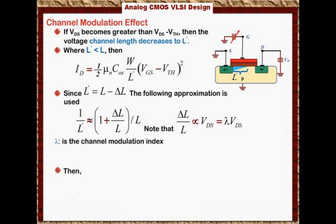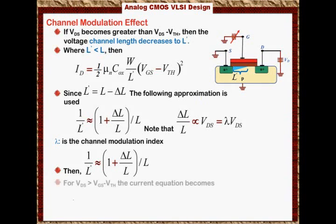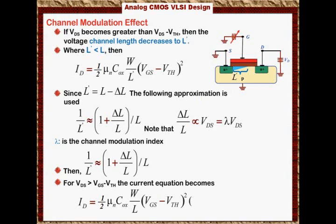Then 1 over L prime, which we say that is approximately equal to 1 plus delta L over L over L. When VDS is greater than VGS minus the threshold voltage, which means I am in the saturation region, the current equation becomes ID will equal to 1 half mu N COX W over L times VGS minus the threshold voltage squared times 1 plus lambda times VDS. This equation is very powerful. You must memorize it. In fact, I never forgot this equation since I was an undergrad.